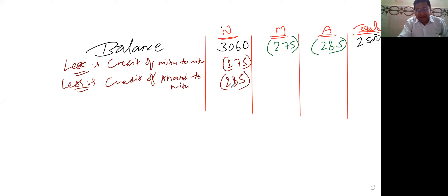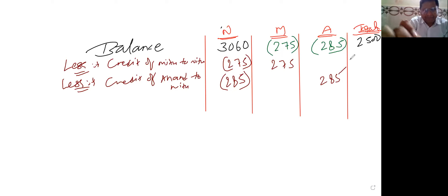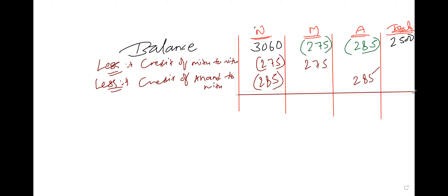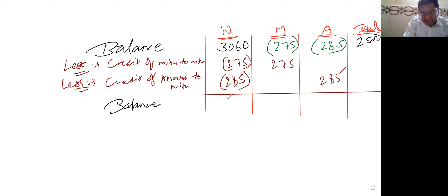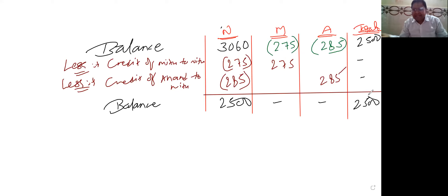285 ठीक है। और यह लोग का तो निकल जाएगा इधर से — इसका 275, इसका 285। That's it. ऐसे ही करना है, और ऐसा करने के बाद finally balance निकाल लेना। So finally balance: 3060 minus 275, minus 285 = 2500. Very good — 2500। इधर का nil हो गया, यह भी nil, सब जगह nil हो गया, और finally आया वही, same — 2500. That's it।